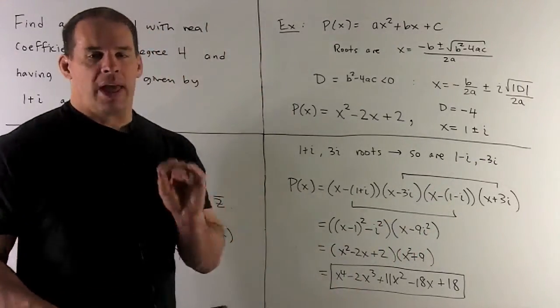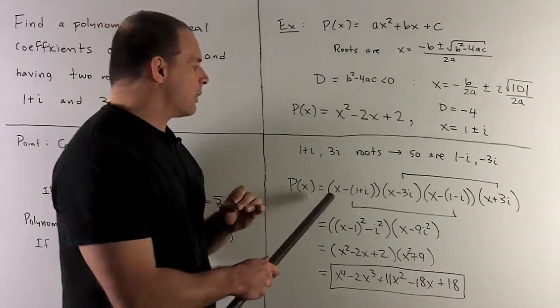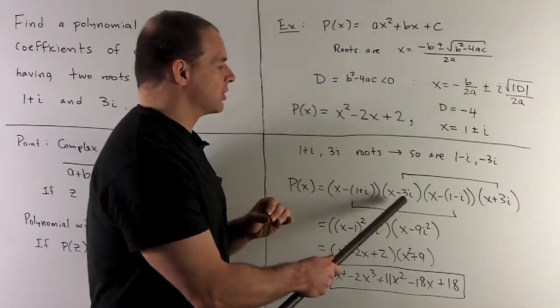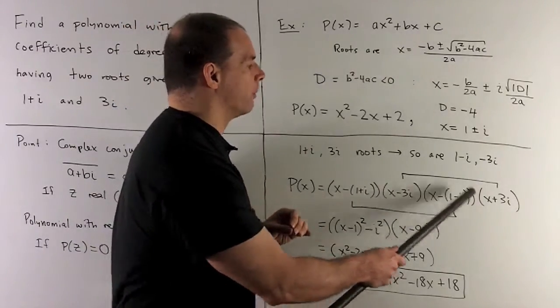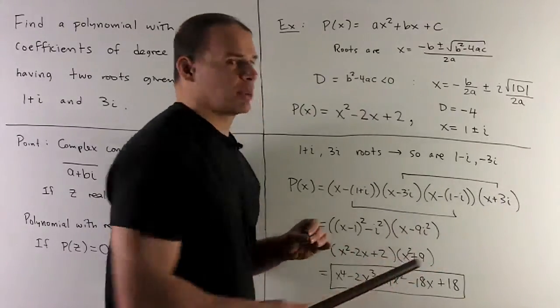We're going to have four factors coming from the roots. It's going to be x minus your root. So we'll have x minus 1 plus i, x minus 3i, x minus 1 minus i, then x minus minus 3i, which is x plus 3i.